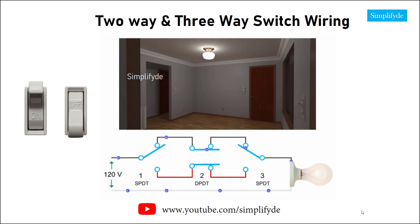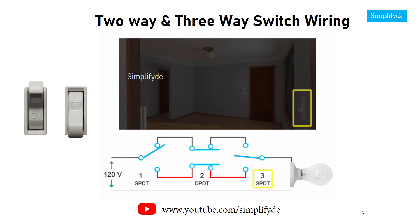If the position of switch two remains unchanged, and switch one is up while switch three is down, the circuit will be broken and current will not flow through the circuit to light the bulb.